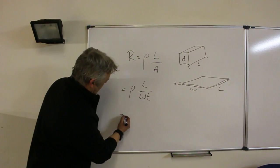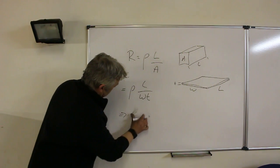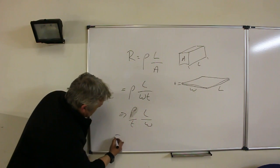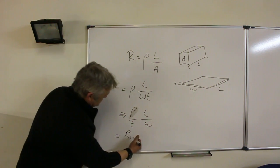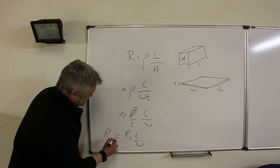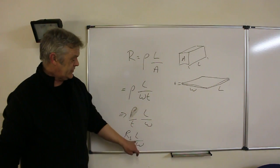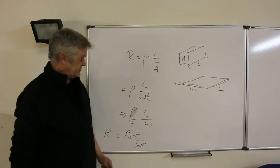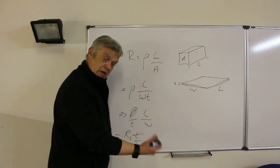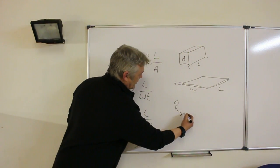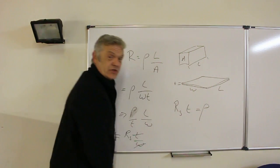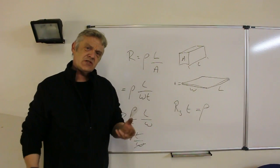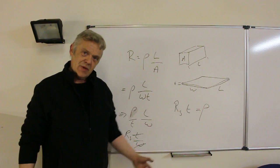If we separate these out, we get rho over T times L/W. That gives us Rs — the sheet resistance — times length over width, which equals our resistance R. If length and width are equal — say both 10 or both 8 — they cancel out, giving R equals Rs, where Rs equals rho over T. So if we take the Rs figure and multiply it by the thickness, we get the resistivity of the material.